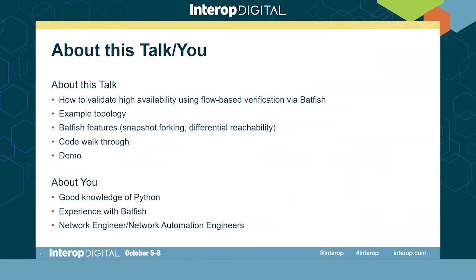This talk is about validating high availability using flow-based verification with the tool Batfish. We're going to take an example topology, deactivate different nodes and links, and check flows across that network. To do this we'll use Batfish features such as snapshot forking and differential reachability, followed by a code walkthrough and a demo. This talk is for people with good Python knowledge and experience with Batfish, as well as network engineers who want to learn more about the verification Batfish can provide.